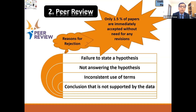The second is the peer review process. As I said, only 1.5% of papers are immediately accepted without need for any revision. Reasons for rejection include failing to state a hypothesis, not answering the hypothesis, using inconsistent terms in your manuscript, and your conclusion not being supported by your data — because reviewers will look at your data and see whether it is supported or not.